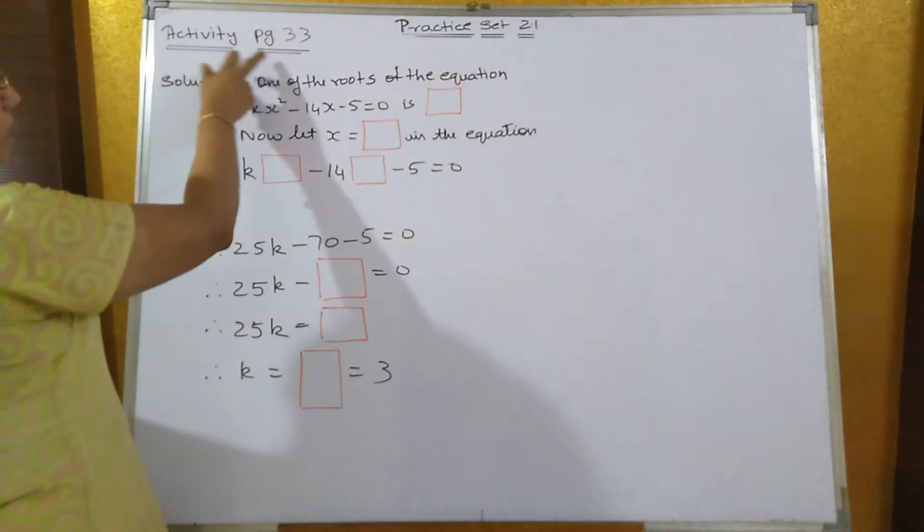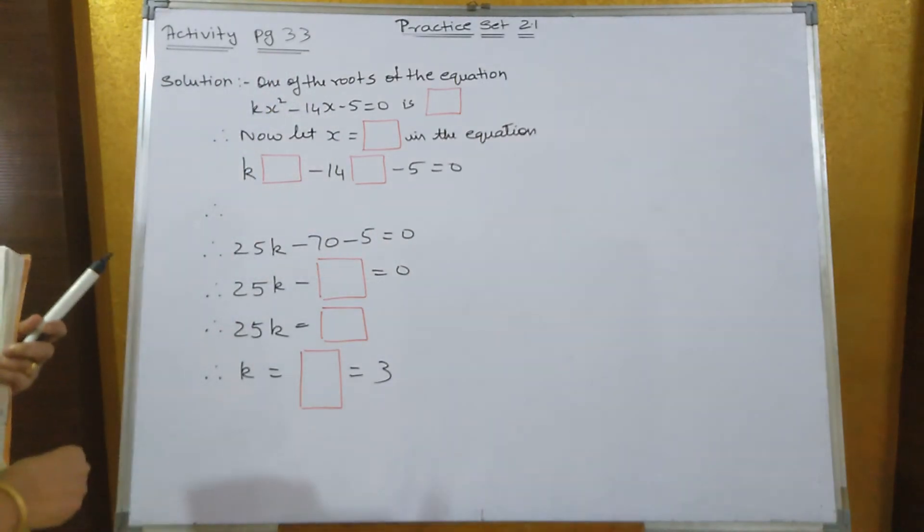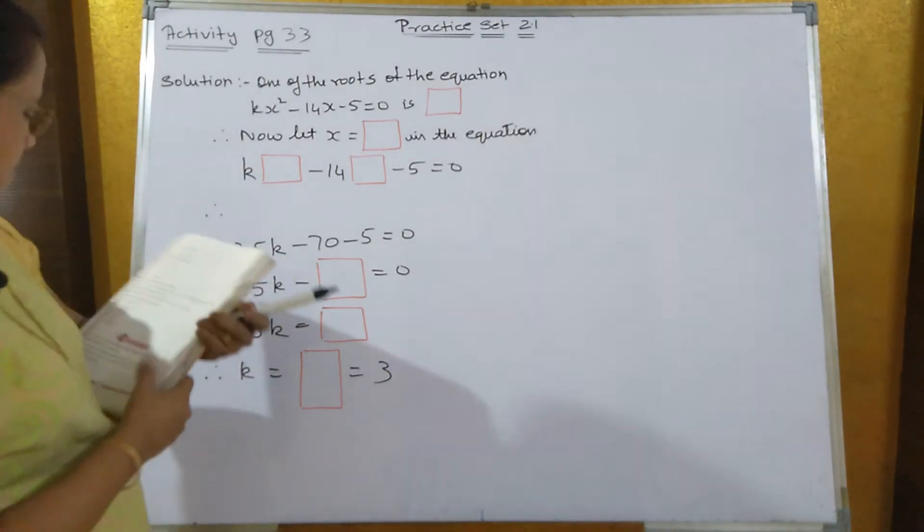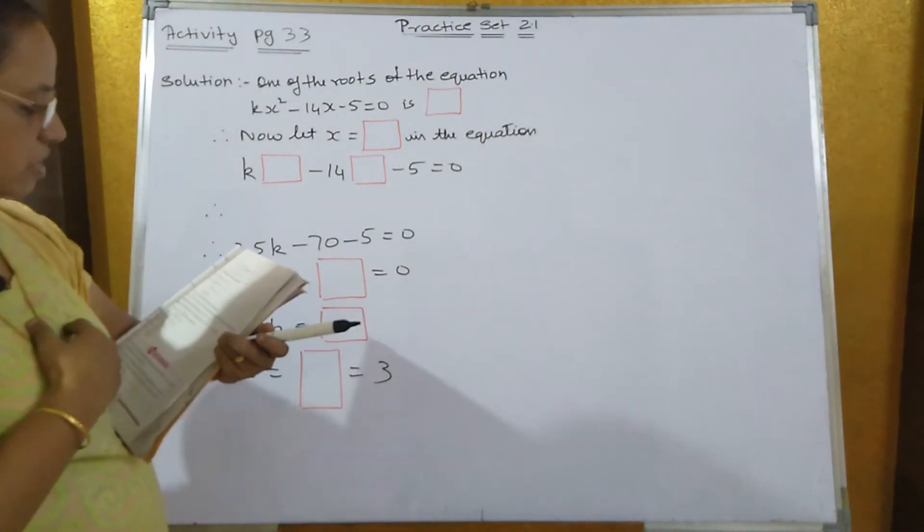Now, the activity which is given on page number 33 before the exercise, the last two sums of the exercise. This activity is the same, only now they have given if x is equal to 5 is a root of the equation.